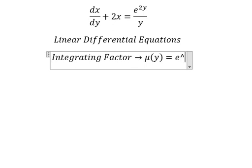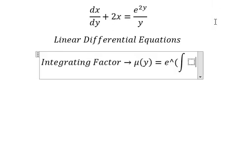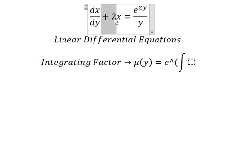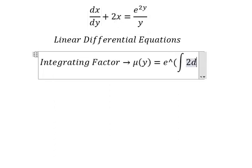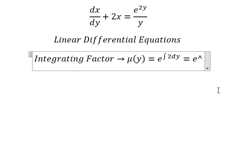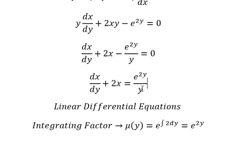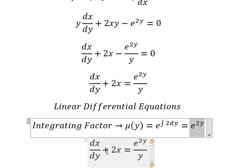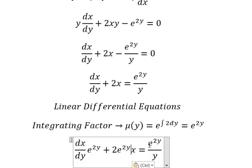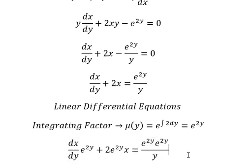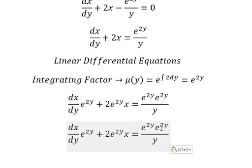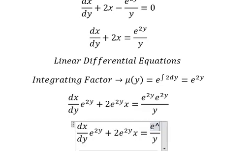The integrating factor equals e to the power of the integral. We see that the positive number 2 is next to x, so the integrating factor is e to the power of 2y. We need to multiply both sides by this integrating factor, giving us e to the power of 4y.